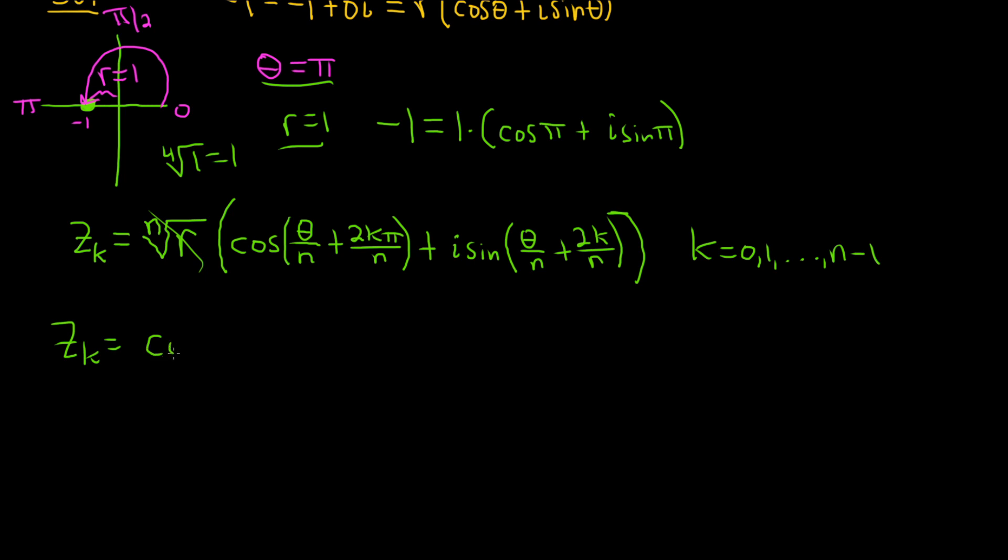So we have cosine - theta is pi and n is 4, so you just get pi over 4 plus 2k pi over 4 plus i sine. Again, theta is pi and n is 4, plus 2k pi - I forgot the pi here - over 4. So now we just have to plug in each number individually.